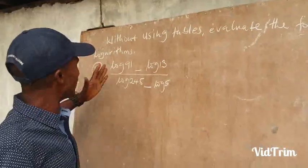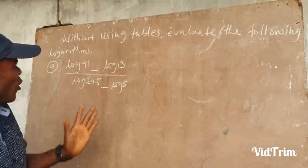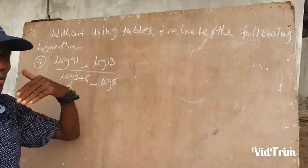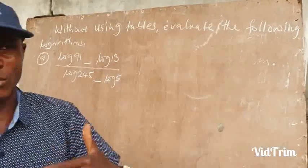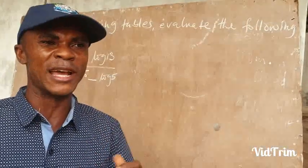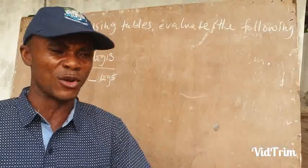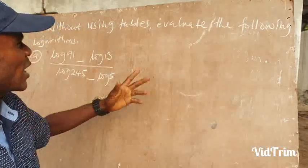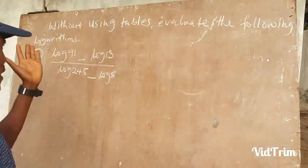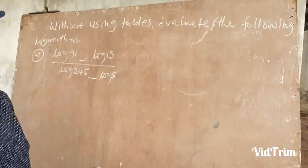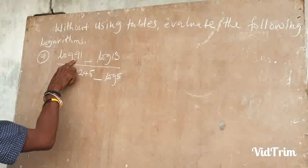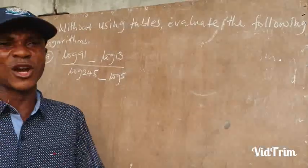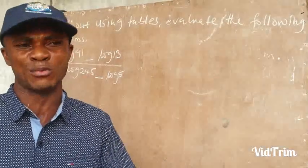The instruction for all of them says: without using tables — and by tables here, I mean the logarithmic table, the logbook, not the ordinary table. Without using tables, evaluate the following logarithms. The first question says: log 91 minus log 13. If you can recall, there was a theorem that says anytime you are dividing, you subtract.